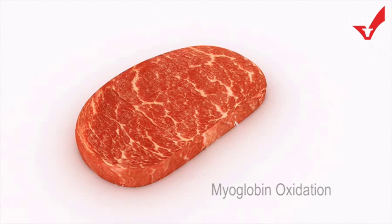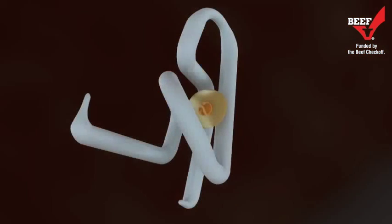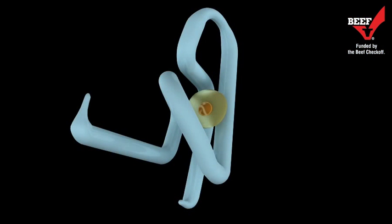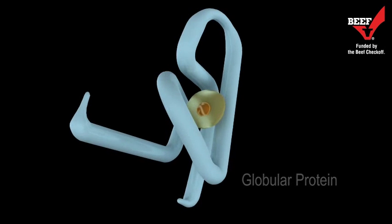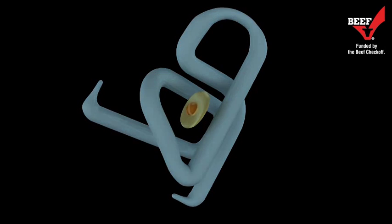Myoglobin is a sarcoplasmic protein that acts as the primary pigment for beef muscle color. Making up 80 to 90 percent of total pigment, myoglobin is made of two parts: a globular protein and a non-protein segment known as the heme or porphyrin ring, located at the center of the myoglobin molecule.